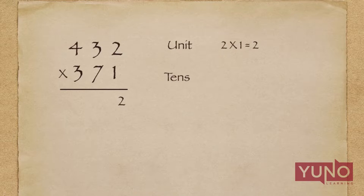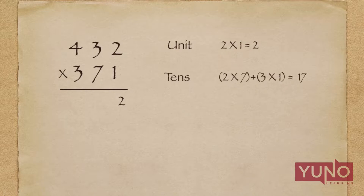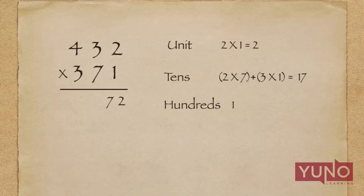I will multiply 2 with 7 and add it to the multiplication of 3 × 1, so the total will be 17. I will write 7 in the answer and this 1 will be used in the next step as a carry.